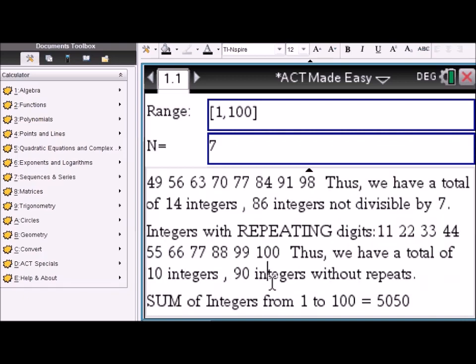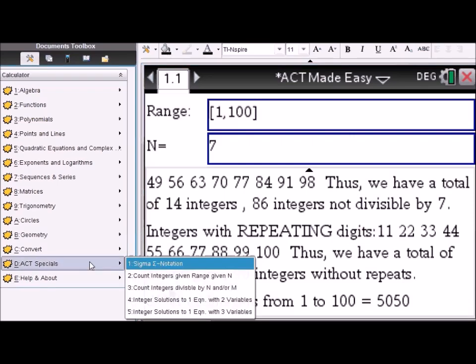How many integers have repeating digits between 1 and 100? That's 10 of them, from 11 to 99. And the sum of the first 100 integers is 5050. Okay, so that's one of the special ACT problems, and we have others here as well.